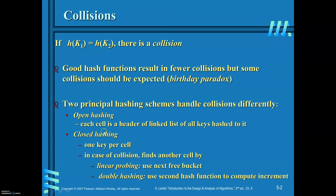In open hashing, each cell is a header of a linked list of all keys hashed to it. In closed hashing, there is one key per cell. In case of collision, it finds another cell by linear probing — that is, use the next free bucket. Double hashing uses a second hash function to compute the increment.